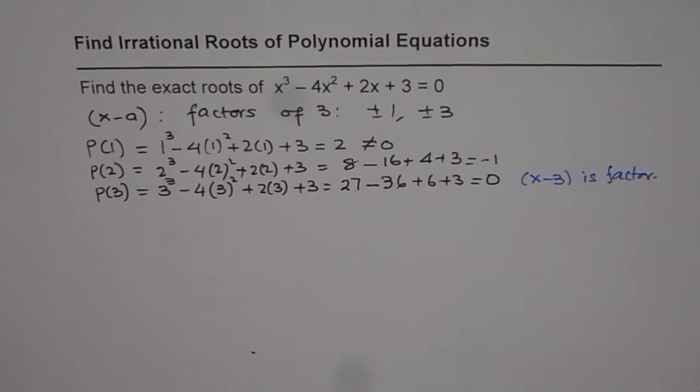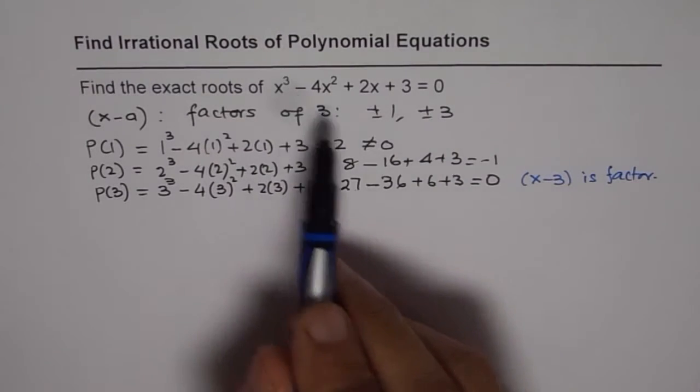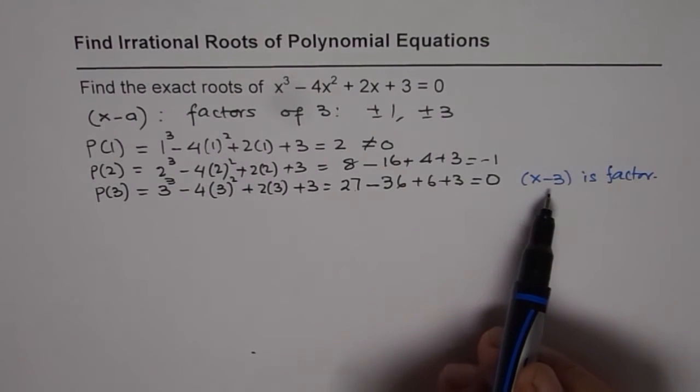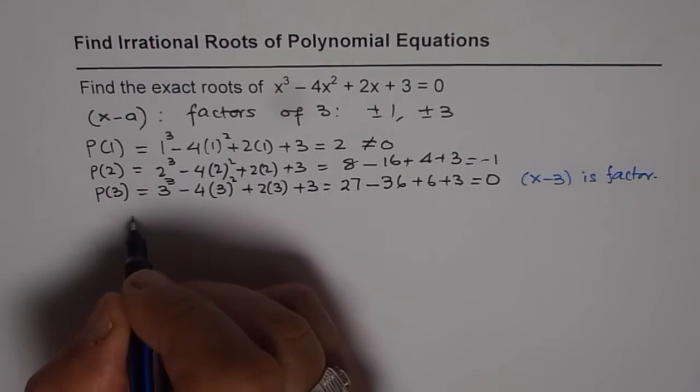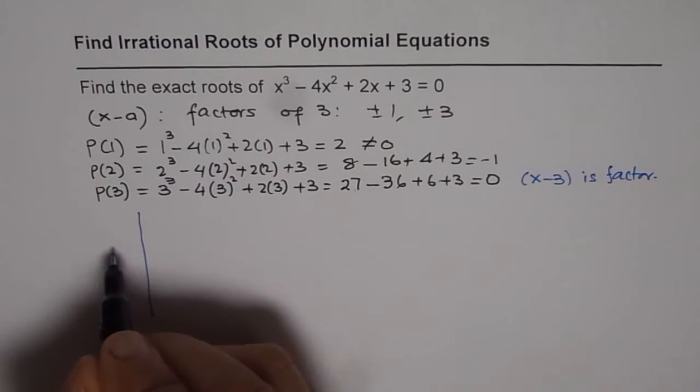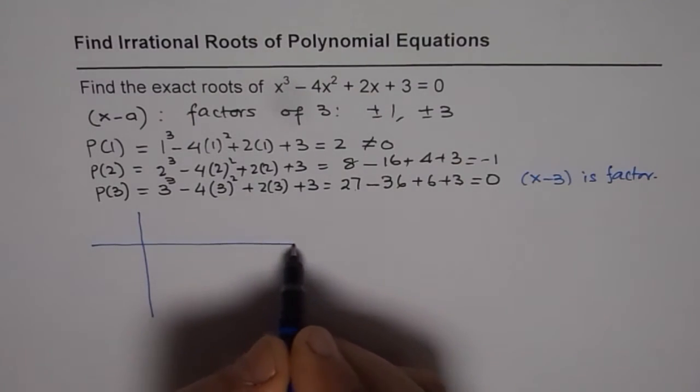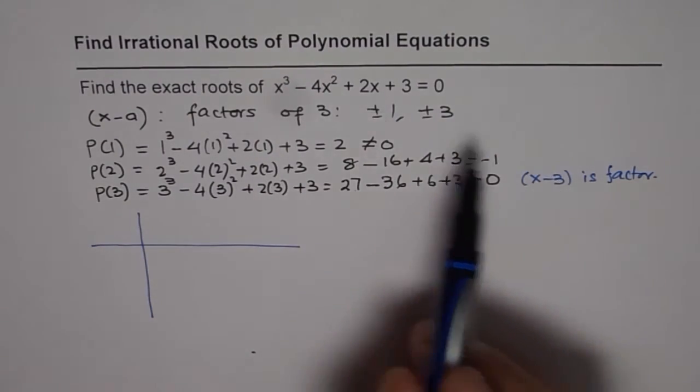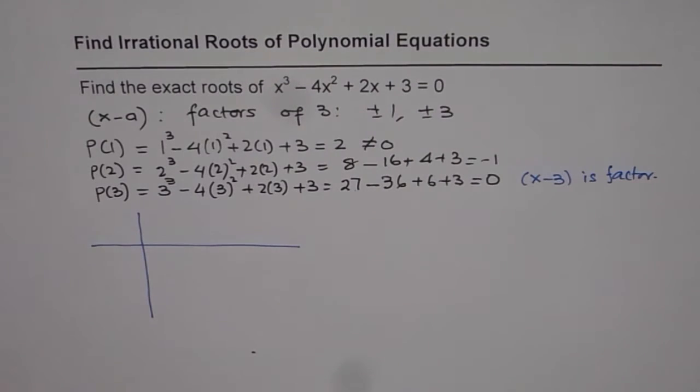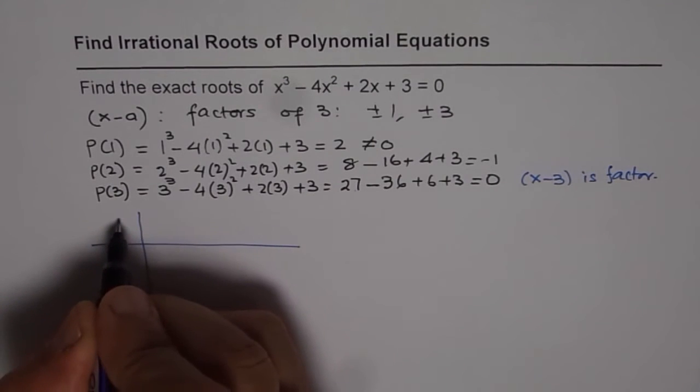If I divide this equation by x - 3, I should get remainder 0. By doing that, we can write this equation as one factor x - 3, and the other factor will be quadratic. Since the other factor is quadratic, we know how to use the quadratic formula and find the answer.